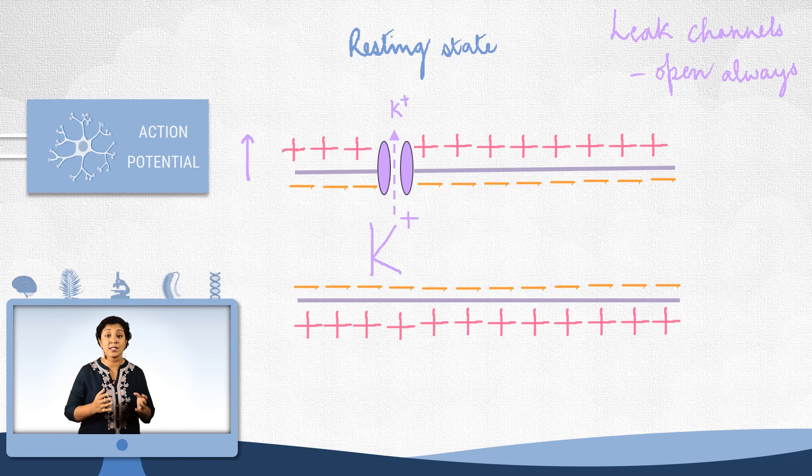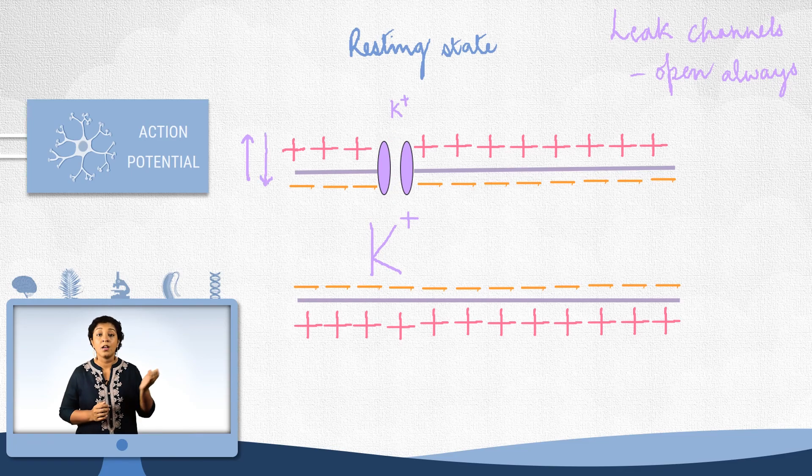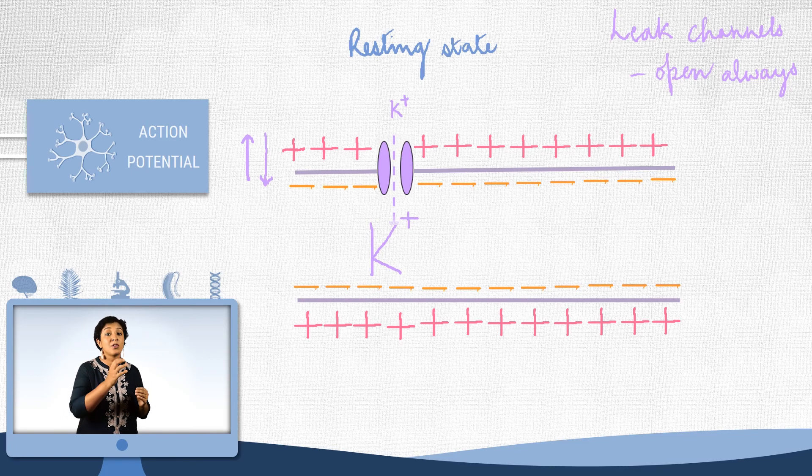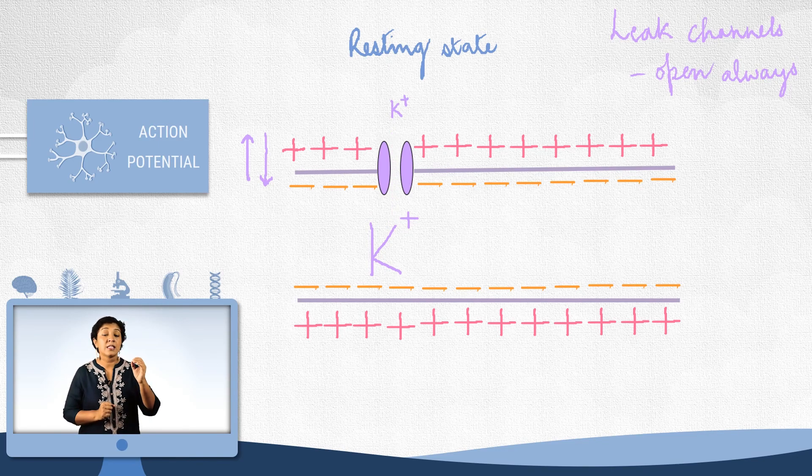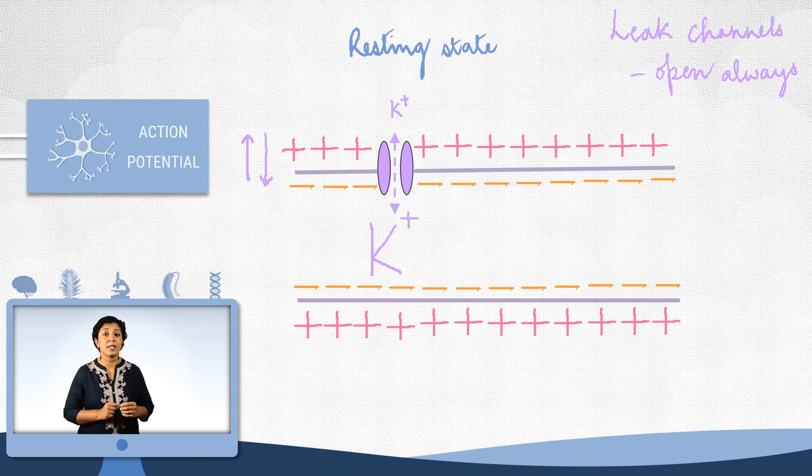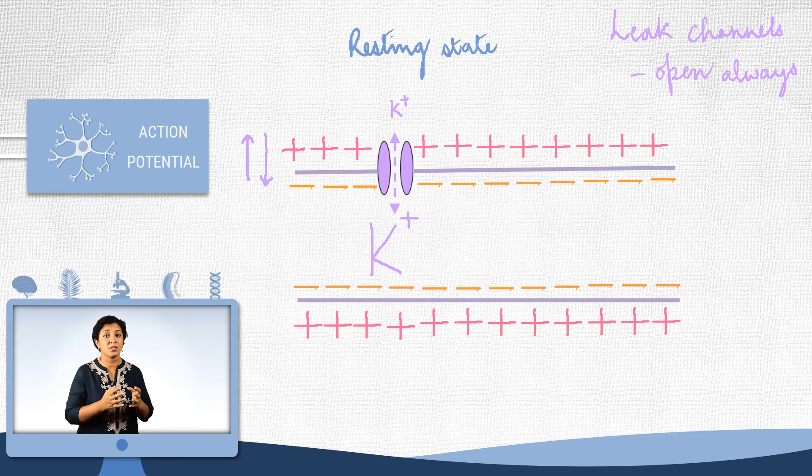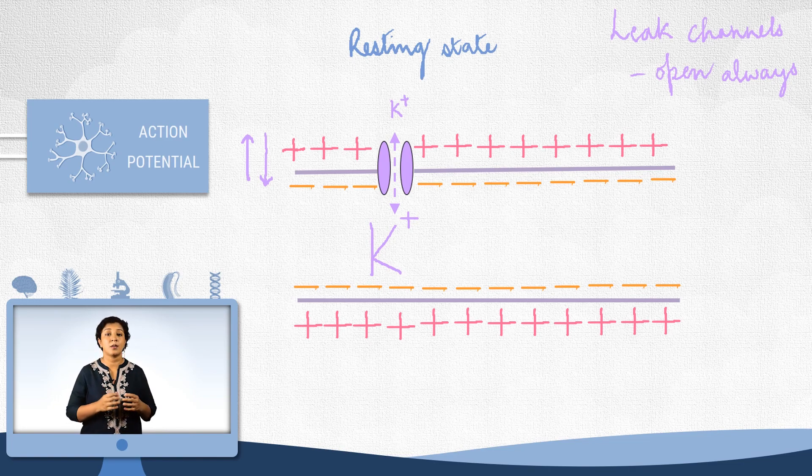Yet, they do not do that. And that is because concentration gradient is not the only force acting here. The negative membrane potential will attract these positive ions inside. So, at minus 70mV, this ion is near equilibrium. That is, the electrical and chemical gradient are acting almost equally in opposite directions. And there is little net movement. So, that is the state of potassium.